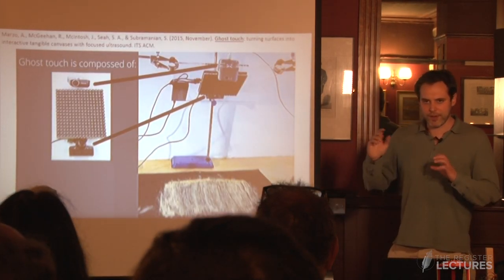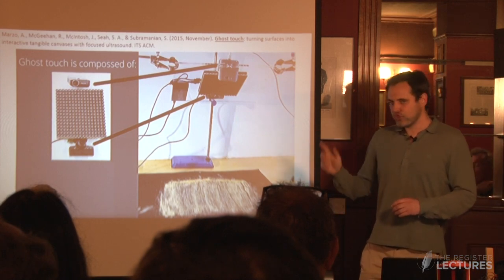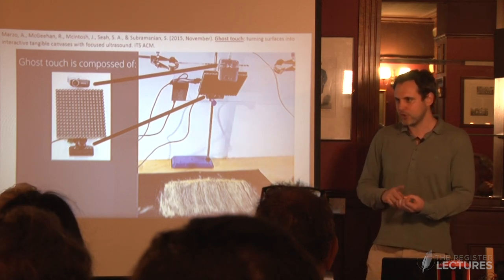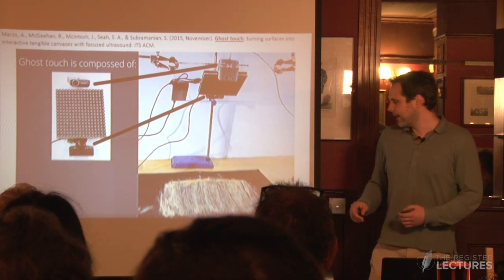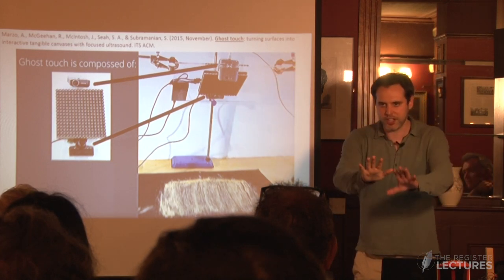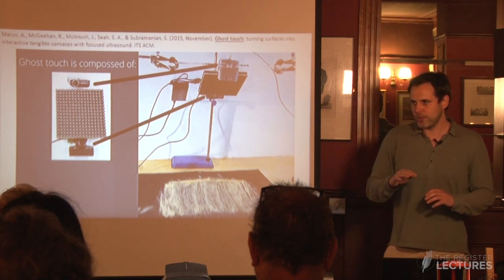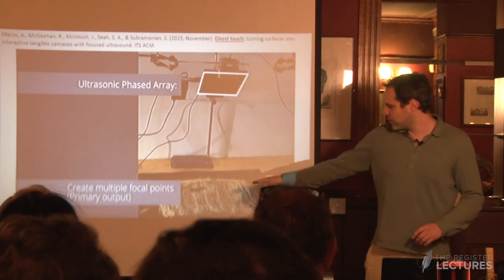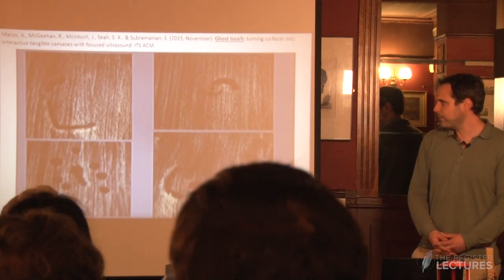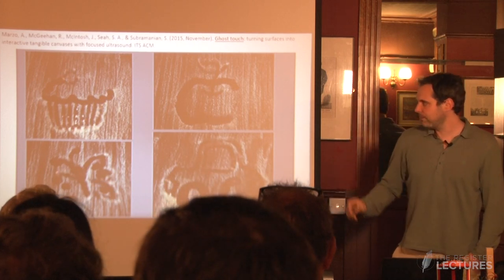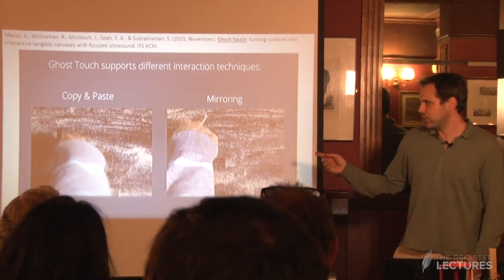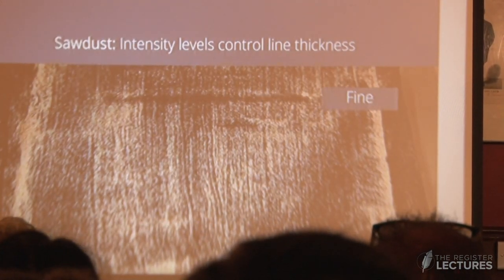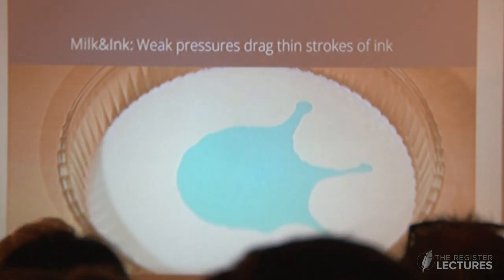One of our very first works is called Ghost Touch. It uses ultrasound to paint or manipulate different artistic media such as sand, ink, or different liquids. We have ultrasonic emitters at 40 kilohertz — so we shouldn't be able to hear anything — and the power of sound moves the sand particles. You can control very accurately the position and intensity, and use it to copy what you are drawing, or have like an invisible ghost that paints along with you. Depending on the pressure and decibels you get different effects, and this also works in liquids.